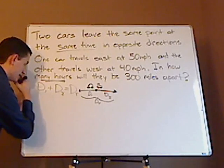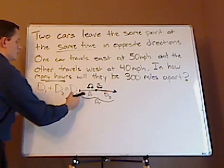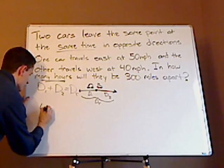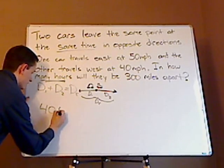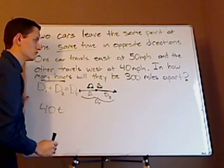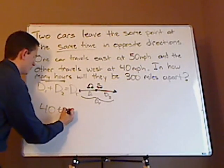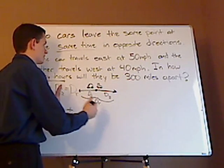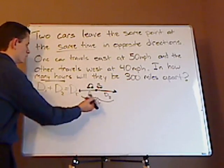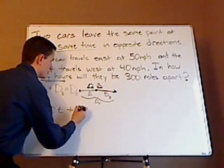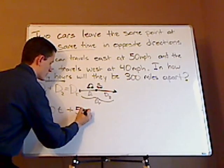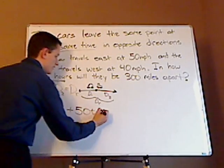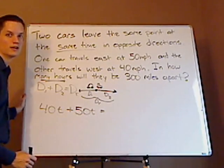So I have this distance, D1. D1 is the one that travels west. So the rate of that is 40 miles per hour times T. Remember, distance equals rate times time plus the rate times the time of the second car, the one traveling east. So that's going 50 miles per hour, and you times that by T. And then the total distance apart is 300.